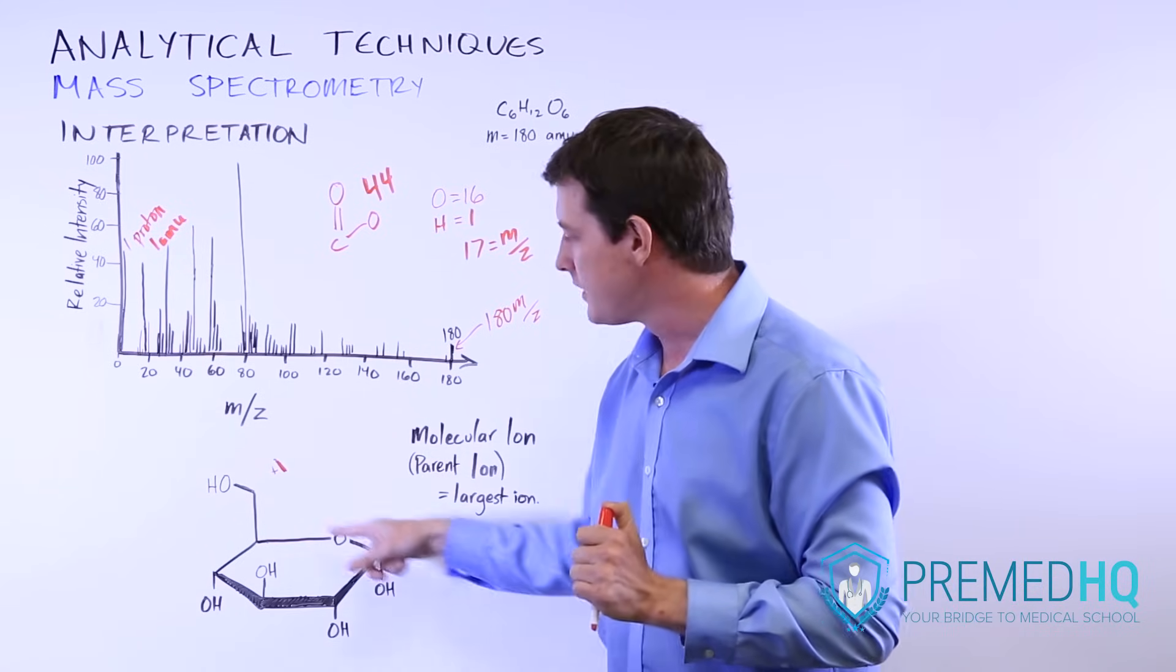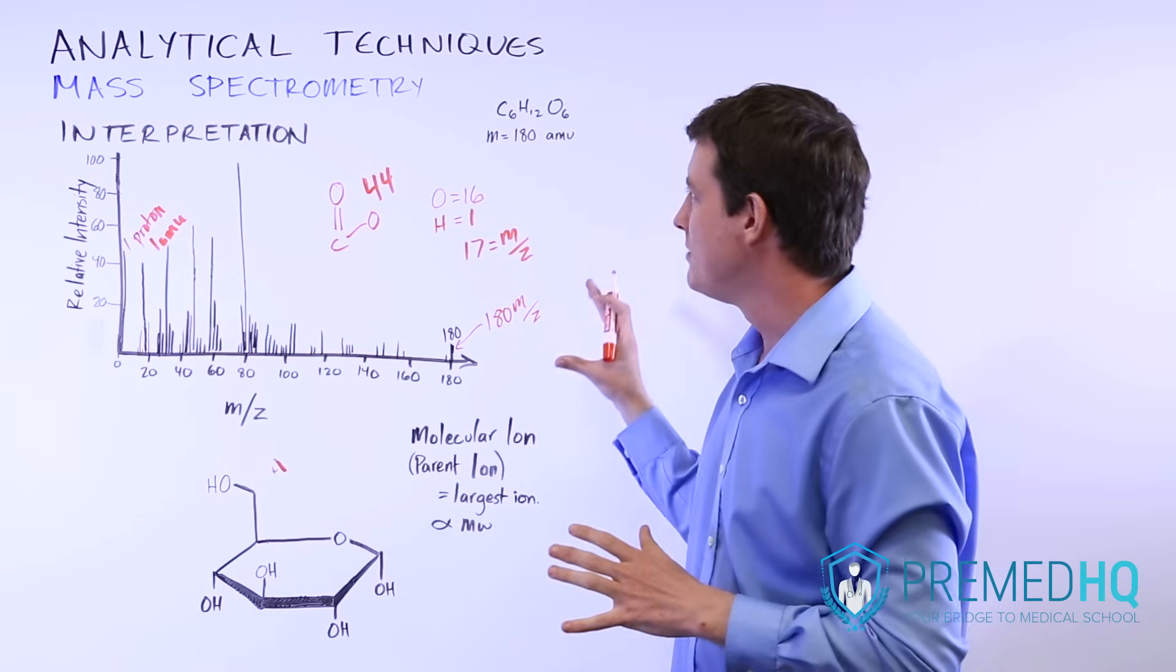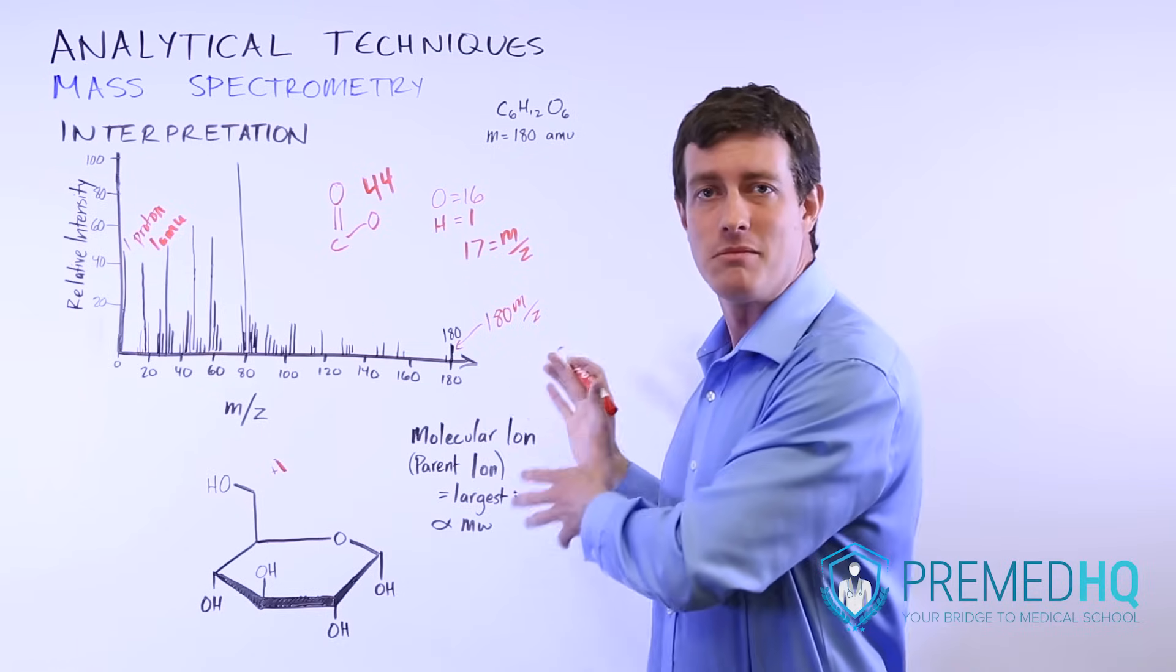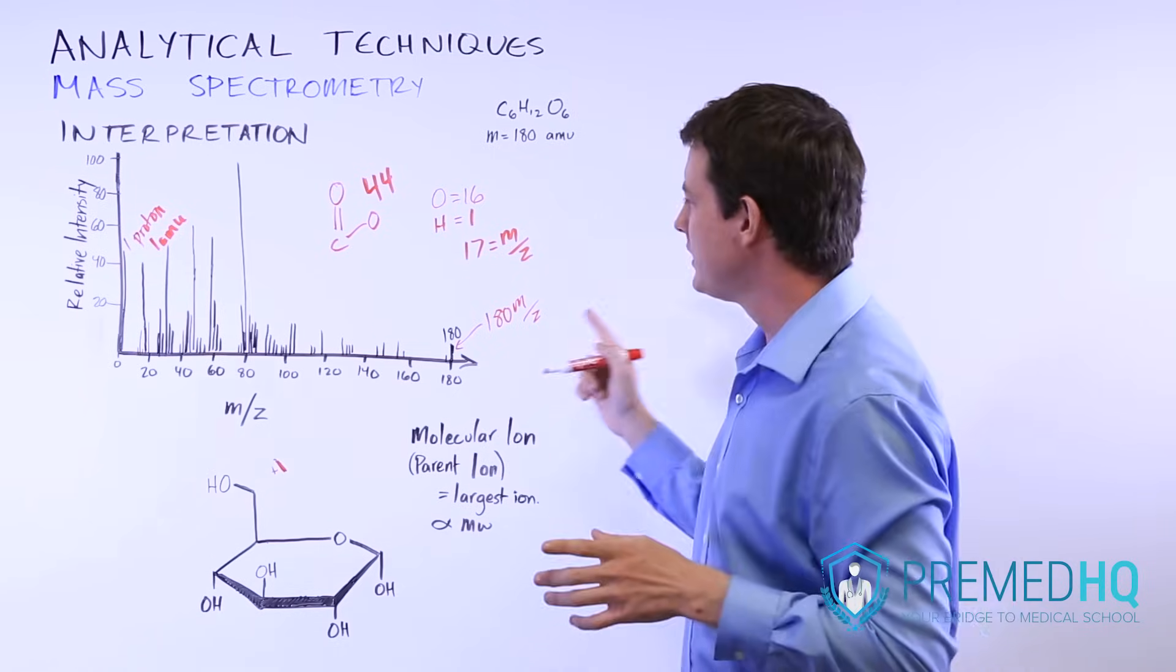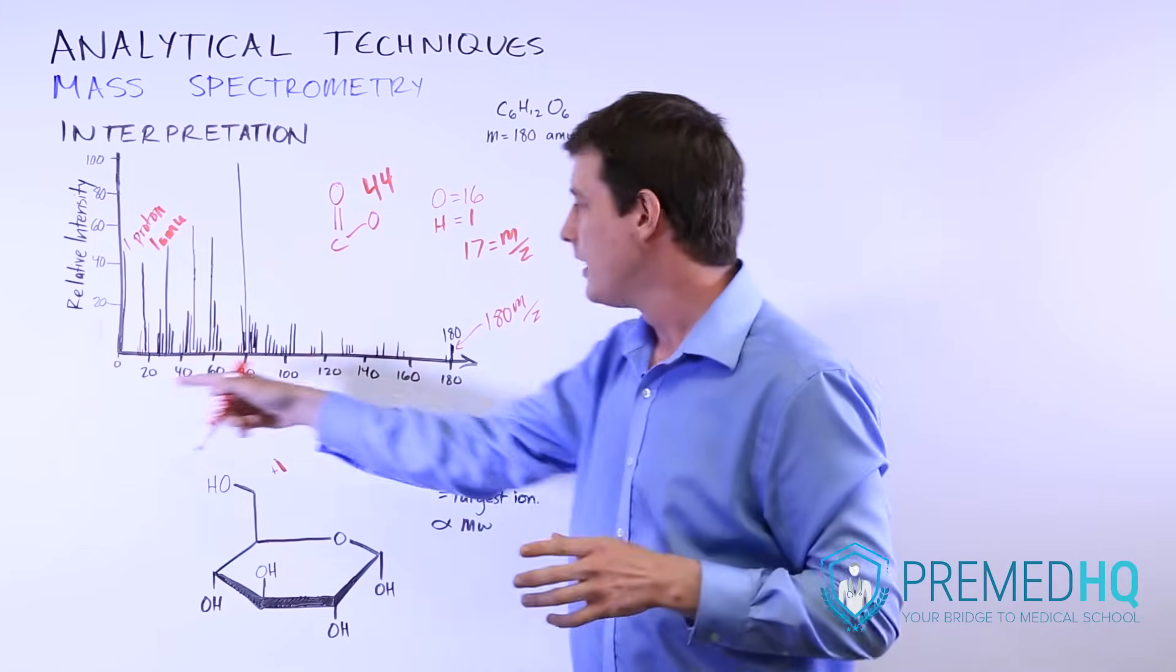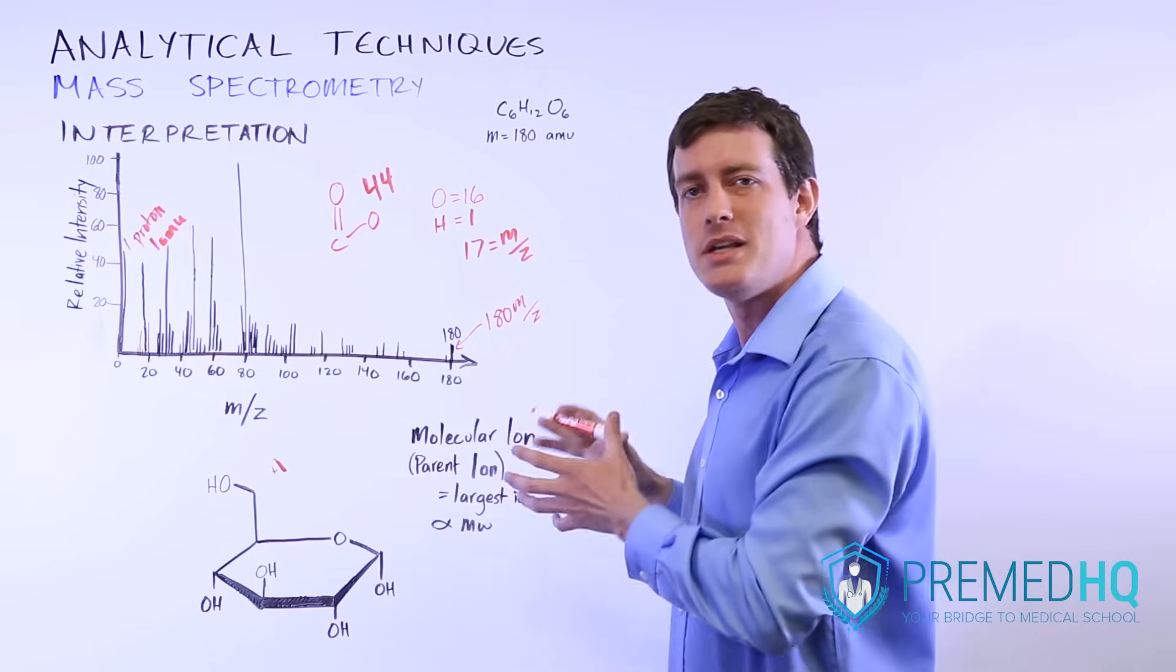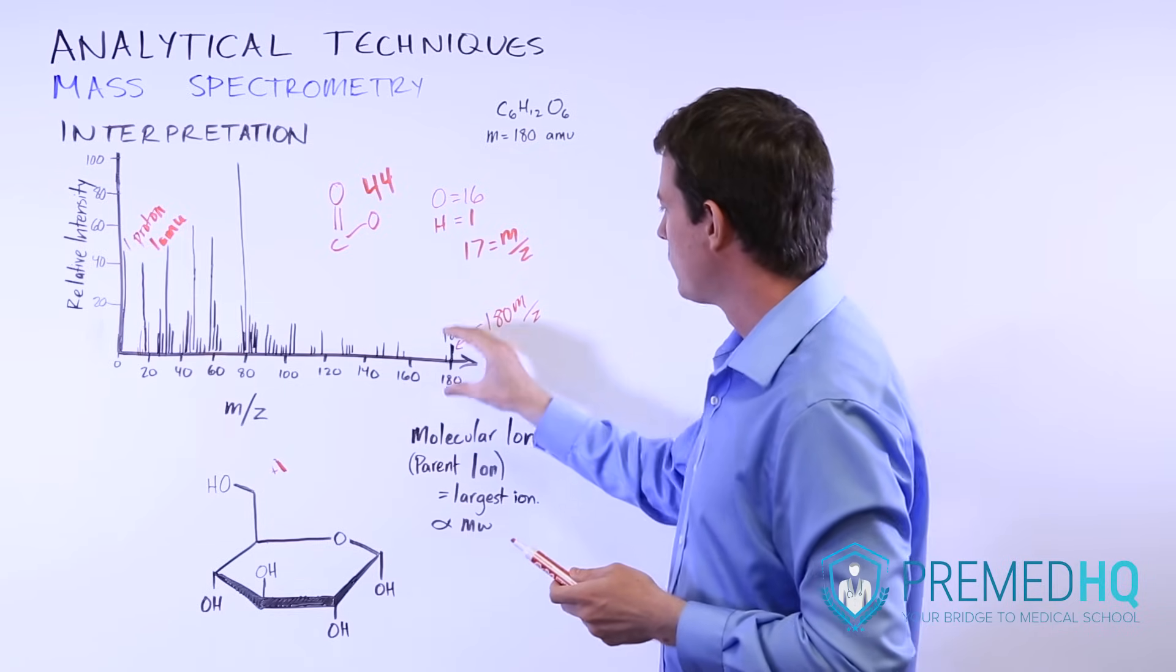Luckily on the MCAT you're not going to have to be a mass spec expert. You're not going to have to interpret every one of these—nowadays a lot of it is done by computers. But what you will need to do is know the significance of the proton peak over here. You'll need to know the significance of the molecular ion or parent ion, the molecular peak or parent peak, that is important to give you the molecular weight of the entire molecule.